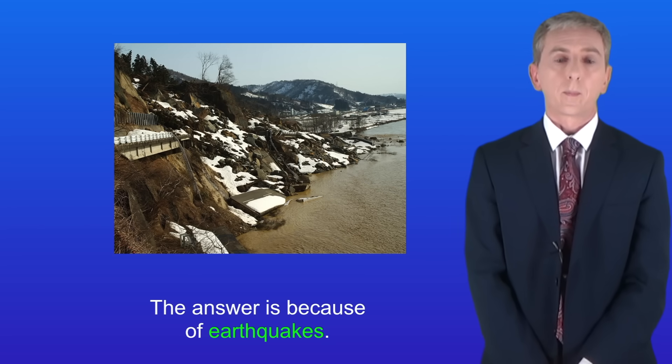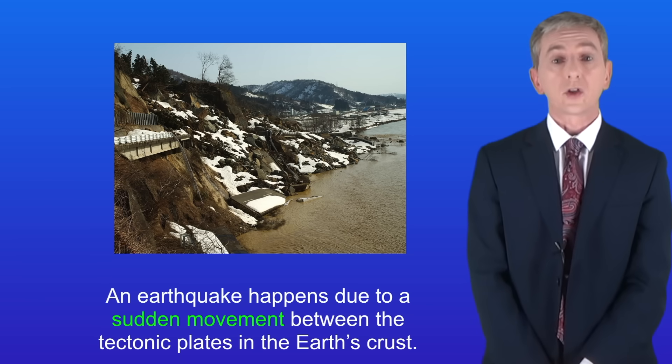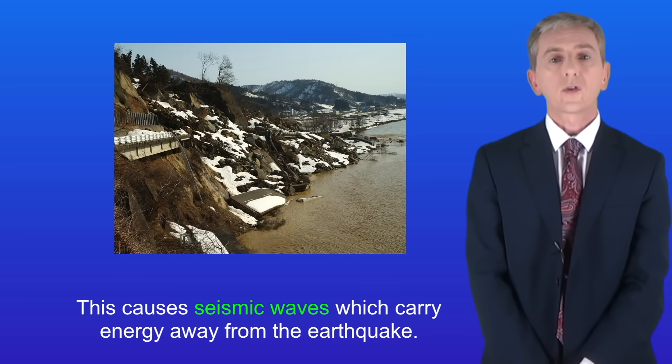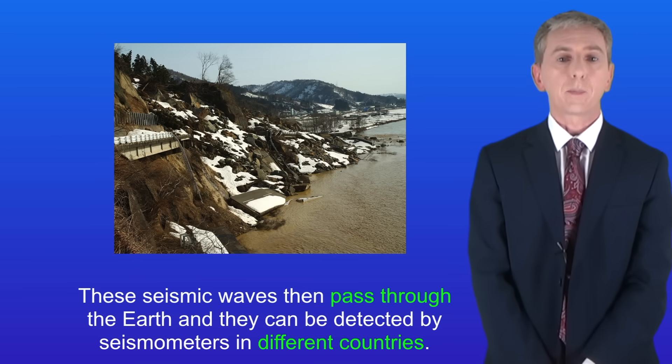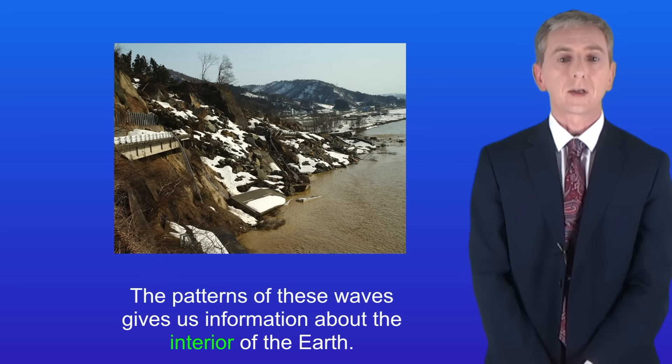An earthquake happens due to a sudden movement between the tectonic plates in the earth's crust. This causes seismic waves which carry energy away from the earthquake. These seismic waves then pass through the earth and they can be detected by seismometers in different countries. The patterns of these waves give us information about the interior of the earth.